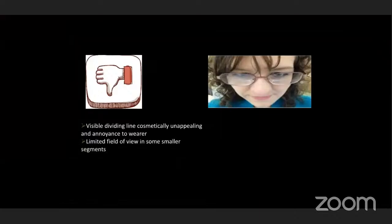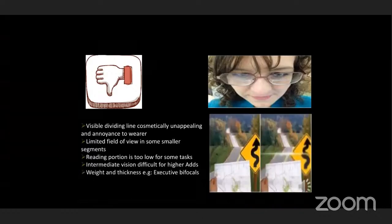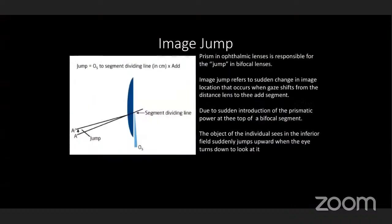Disadvantages of bifocal lenses: there is a visible dividing line which is cosmetically unappealing and an annoyance to the wearer. There is limited field of view in some smaller segments. When the reading portion is too low for certain tasks — especially for computer workers — the patient has to raise their chin to look at that point. Intermediate vision is difficult for higher add powers. There is also increased weight and thickness, for example in executive bifocals. Finally, there is image jump: prism in ophthalmic lenses is responsible for the jump in bifocal lenses. Image jump refers to a sudden change in image location when gaze shifts from the distance lens to the add segment, due to sudden introduction of prismatic power at the top of the bifocal segment — the object seen suddenly jumps upward when the eye turns down.